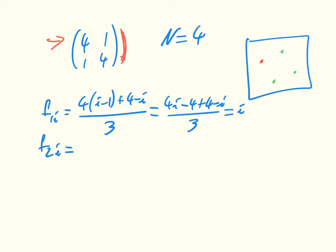Similarly, f2i is equal to i plus 4 times 3 minus i, everything divided by 3, which is equal to 12 minus 3i divided by 3, which is just equal to 4 minus i.